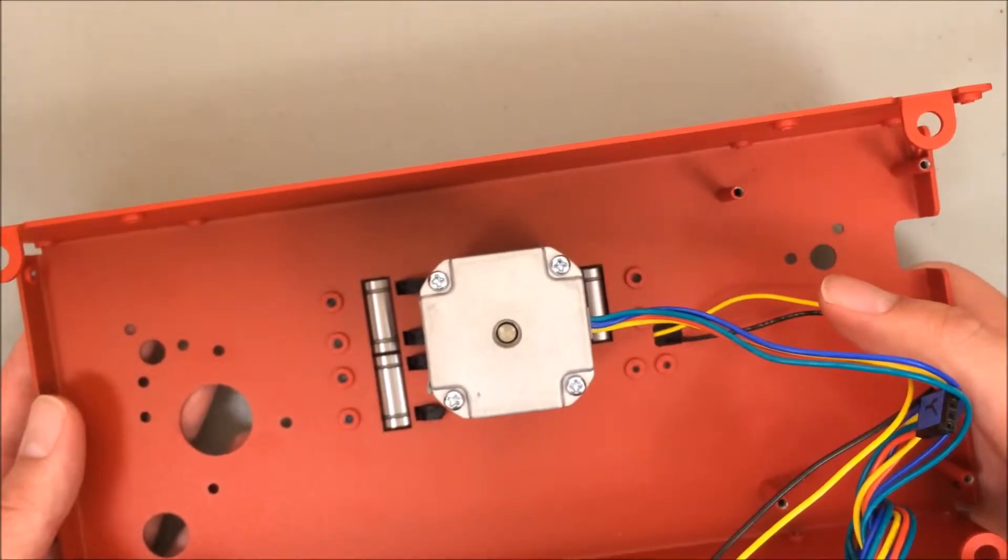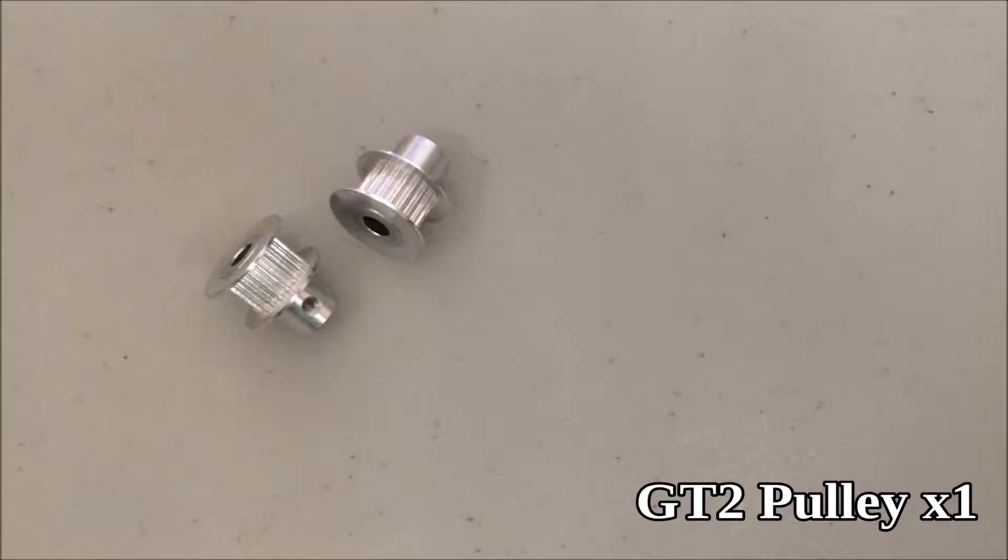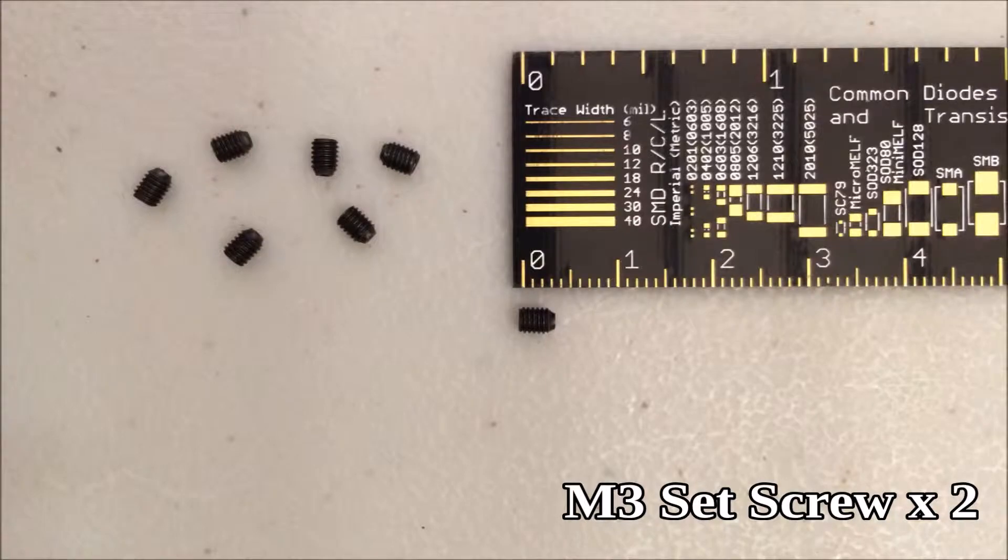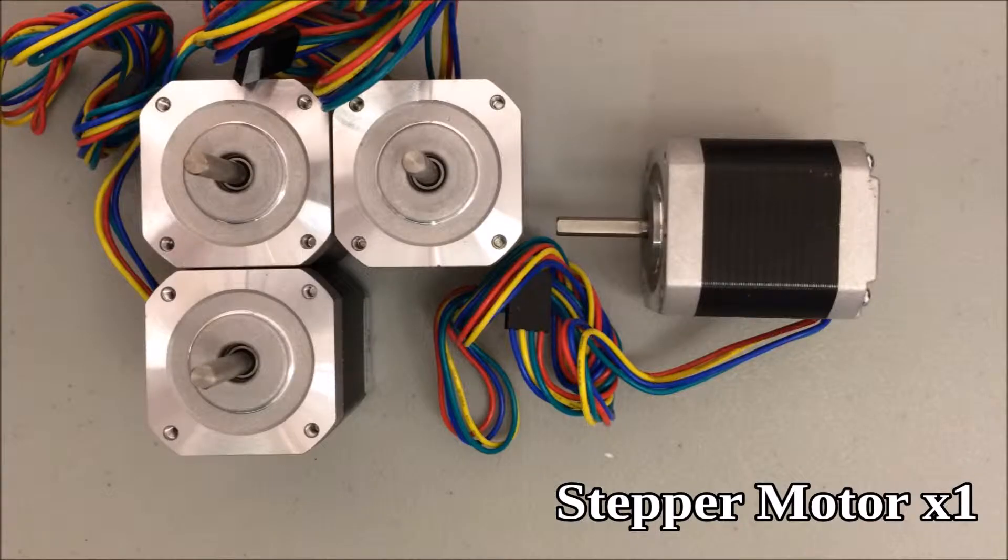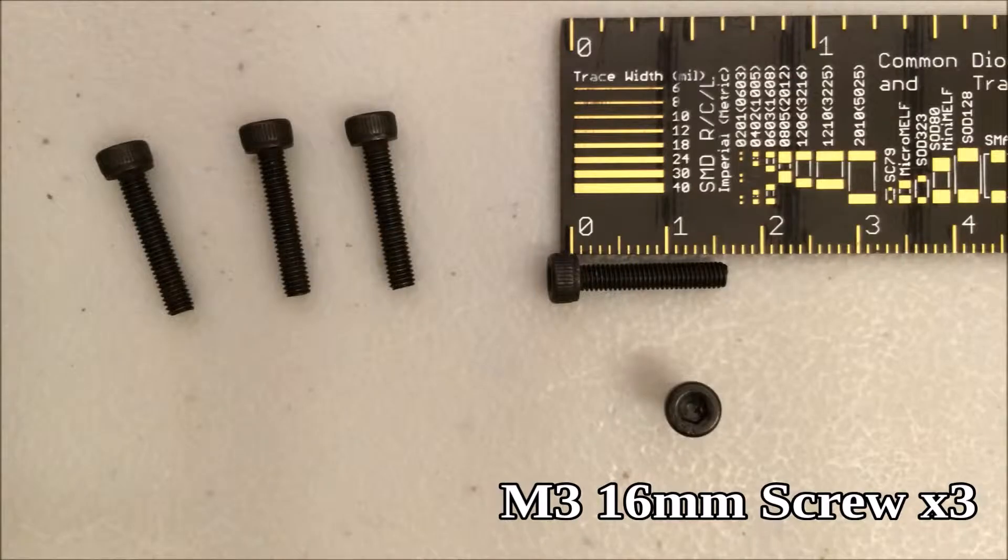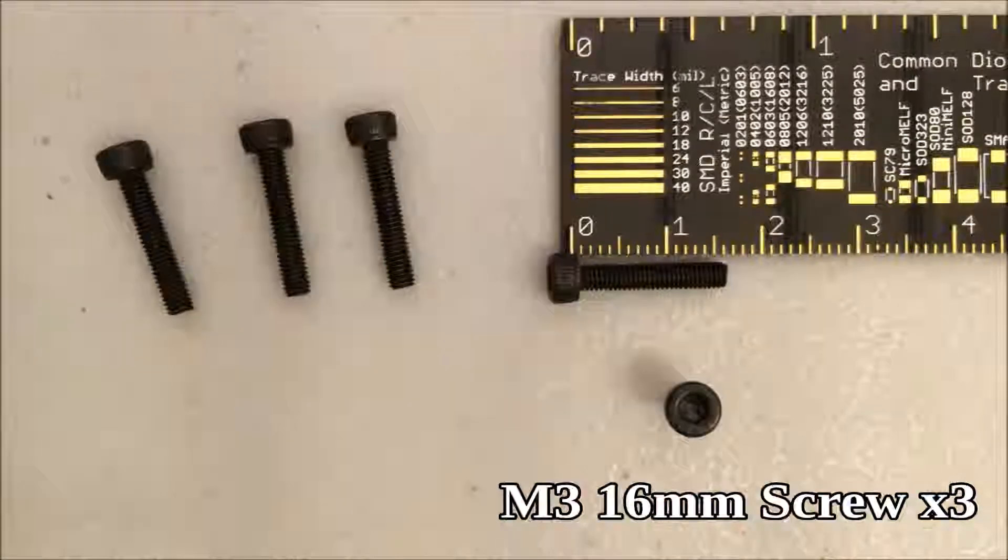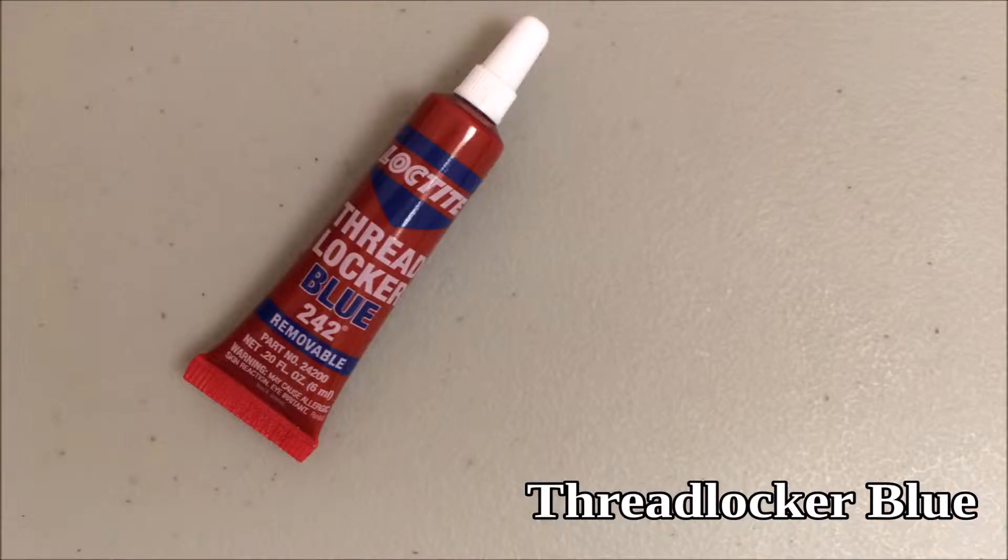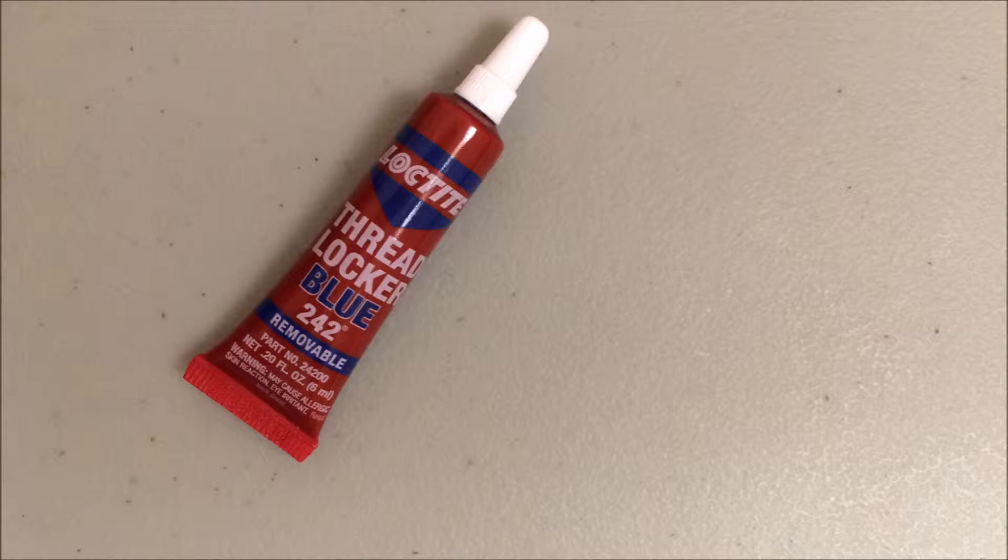Let's take a look at what parts you need to install this. One GT2 pulley, two M3 set screws, one stepper motor, three M3 16 millimeter screws, and Threadlocker Blue. Threadlocker Blue is not included in the kit, however you can find it at most large hardware stores.